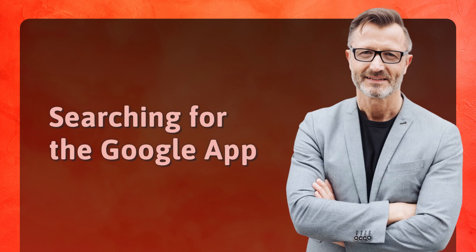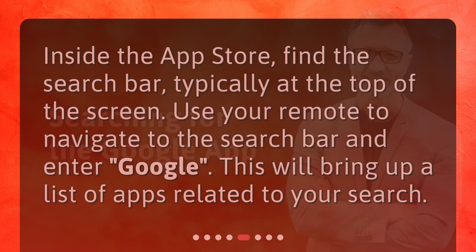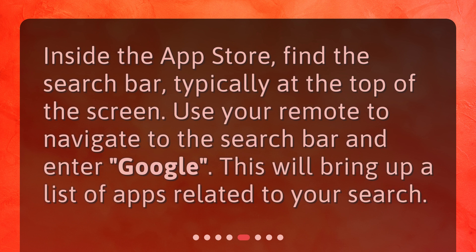Searching for the Google App. Inside the App Store, find the search bar, typically at the top of the screen. Use your remote to navigate to the search bar and enter "Google." This will bring up a list of apps related to your search.